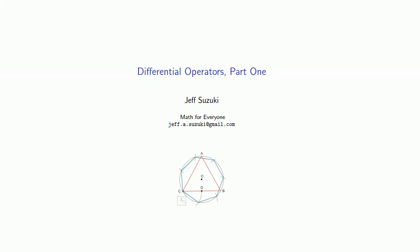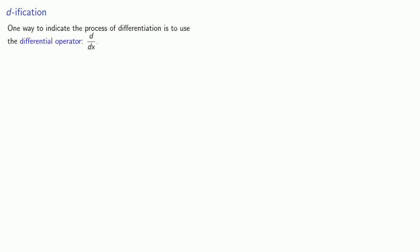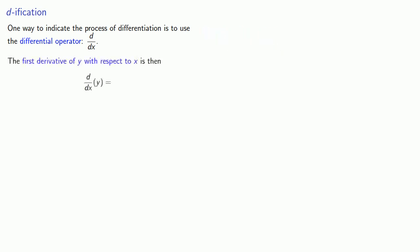Let's introduce a powerful way to represent and solve differential equations known as a linear differential operator. This goes back to one of the many ways we have of introducing the derivative. One way to indicate the process of differentiation is to use what's known as the differential operator, which we write as d over dx. The first derivative of y with respect to x is d over dx applied to y, which gives us dy over dx.